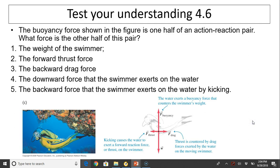Let's check your understanding. The buoyancy force shown in the figure is one half of an action-reaction pair. What force is the other half? The buoyant force is the water exerting a force that counters the swimmer's weight. The reaction would be the swimmer exerting a force downward on the water. The action is water pushing the swimmer up, so the reaction is the swimmer pushing the water down—a downward force the swimmer exerts on the water.